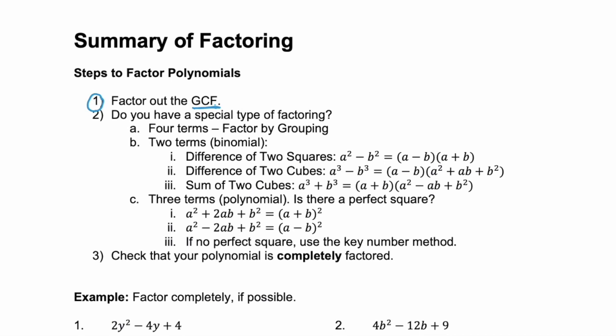Step two asks: do you have a special type of factoring? Remember, if you have four terms, you can factor by grouping. If you have two terms — a binomial — you probably have the difference of two squares, the difference of two cubes, or the sum of two cubes. If you have one of those, you follow one of these given formulas.